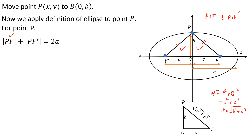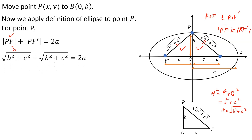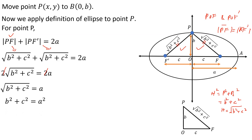Similarly, PF' = √(b² + c²) as PF and PF' are equal in this case. We use these values in our equation: √(b² + c²) + √(b² + c²) = 2a. Adding the left-hand side and cancelling 2 on both sides, then squaring both sides, we get b² + c² = a², which implies c² = a² - b². And that's what we were to find.